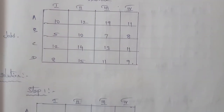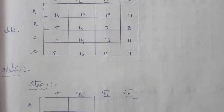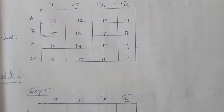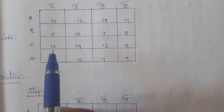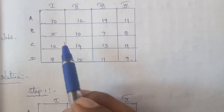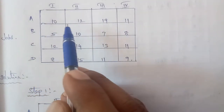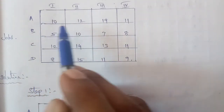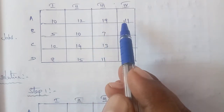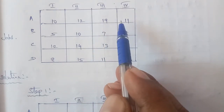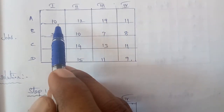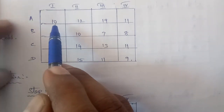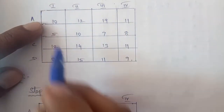First step: find the least number in each row. First row: the numbers are 10, 12, 19, and 11. The least number is 10. Subtract 10 from each element of the row.